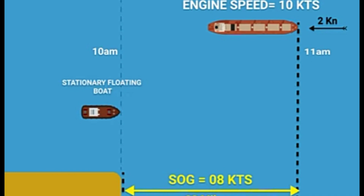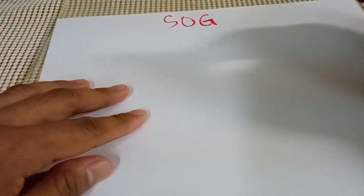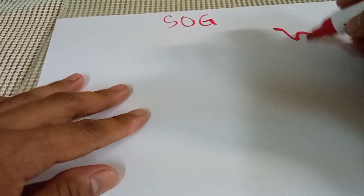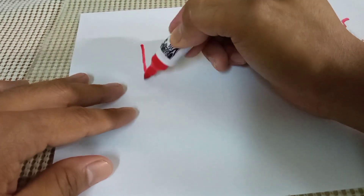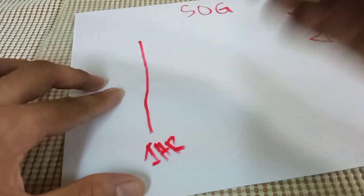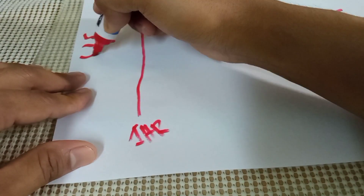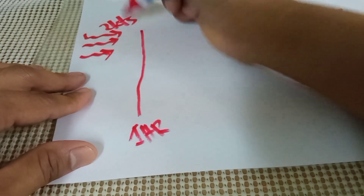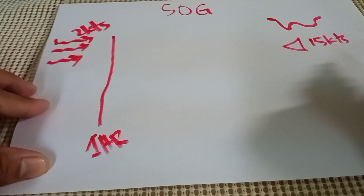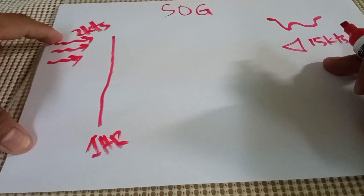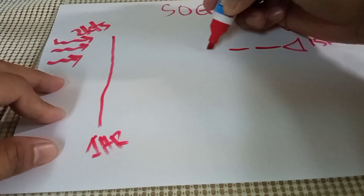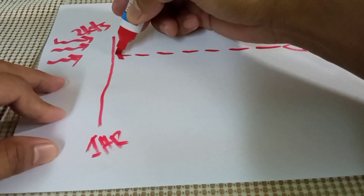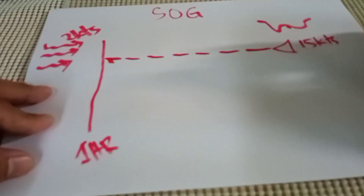Let's start with speed over the ground. In this example, I have land here and this is your vessel with 15 knots of speed. After one hour, there is a wind or current with two knots of speed ahead of your vessel — against the movement of your vessel. So the question is: what is the speed over the ground of your vessel with respect to the land?